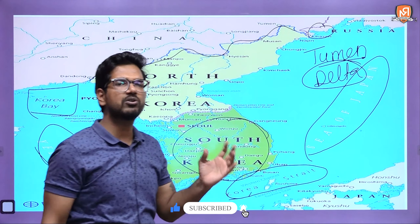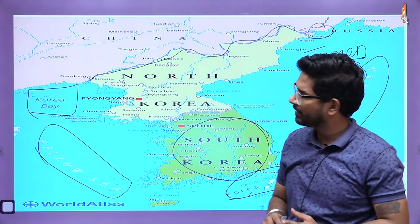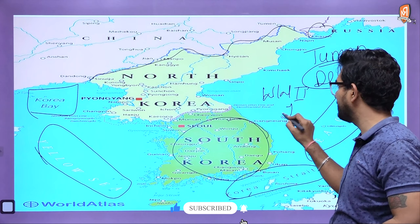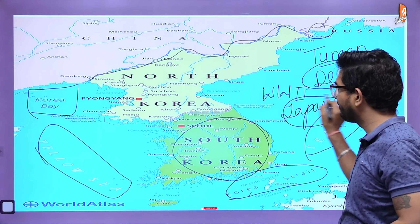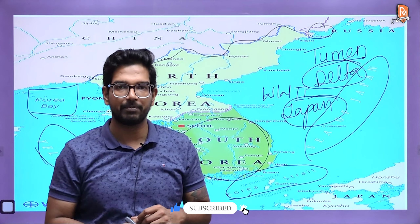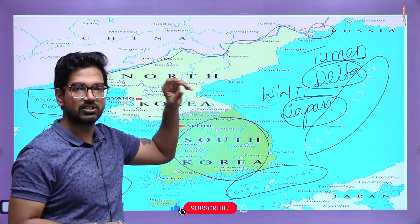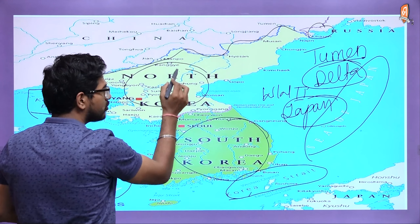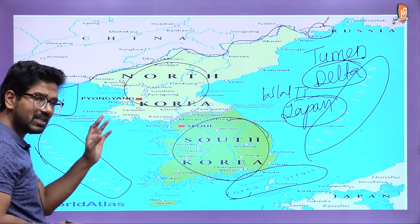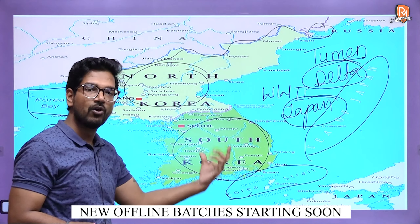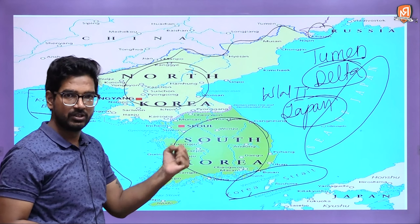Let me tell you about some history of North Korea and South Korea. Before World War 2, this area was under the control of Japan. After the defeat of Japan in World War 2, the Allies took control over this area. Around 1948, the USSR was trying to increase its sphere of influence in this region, so it supported the regime of North Korea, and they joined the communist bloc. The southern half was under the influence of the USA, the capitalist side.